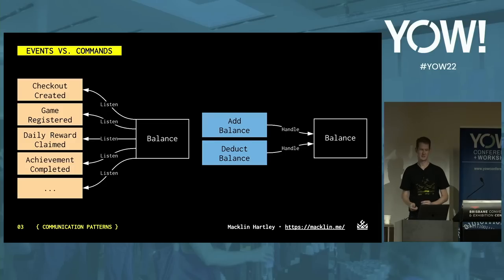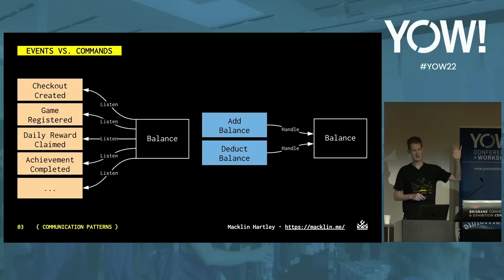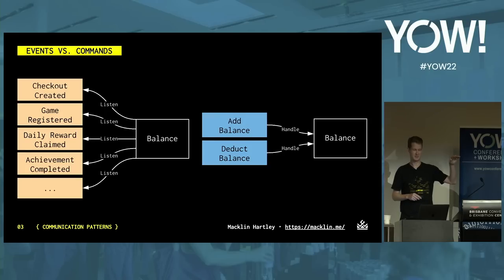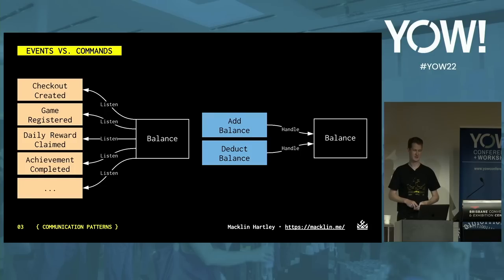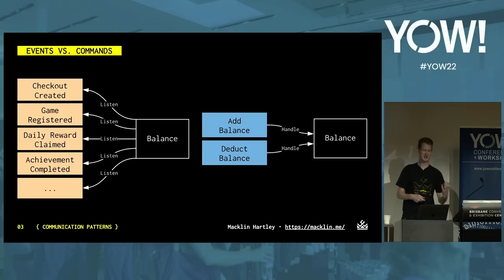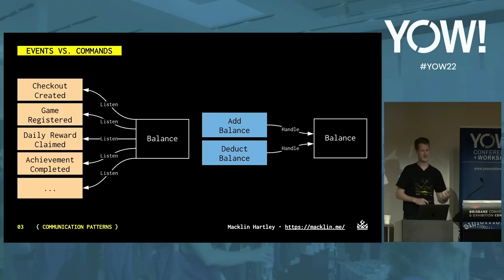Before I talk about orchestration, let's look at the difference between events and commands. Our events are in orange — services can listen to events produced by workflows they care about. As we can see, the balance service is listening to events from many different workflows: checkout created, game registered, daily reward claimed, achievement completed. For every new workflow, it needs to subscribe to more events. What if we just flip this around? With commands — in blue — the service doesn't need to know about all these workflows. The balance service just does two things: handles 'add balance' and 'deduct balance' commands.